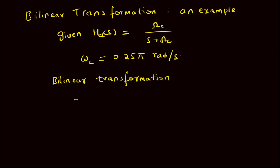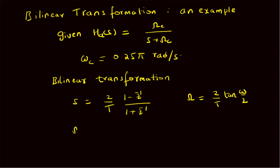For the variable s, the required transformation is s = (2/T) × (1 − z⁻¹) / (1 + z⁻¹). For the frequency, the transformation is given by: the analog frequency Ω = (2/T) × tan(ω/2), where ω is the frequency corresponding to the digital domain.